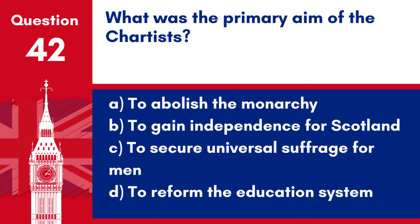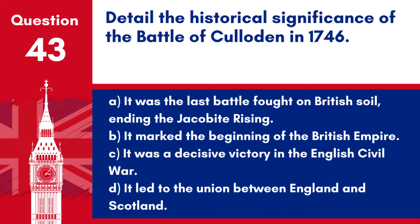Question 42. What was the primary aim of the Chartists? a. To abolish the monarchy. b. To gain independence for Scotland. c. To secure universal suffrage for men. d. To reform the education system. Answer: c. The Chartists' primary aim was to secure universal suffrage for men, as part of a broader campaign for democratic reforms.